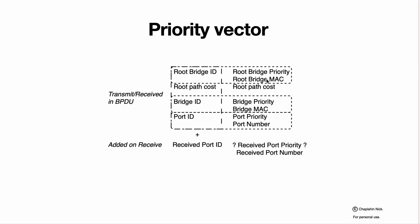Root bridge ID and bridge ID each consist of a priority value and a MAC address, making the value as unique as possible while remaining compatible. Root path cost is the cost of the path from this device to the root device — not a simple hop count, but based on the line rate of ports along the path. On each device, after receiving a BPDU, two priority vectors add additional information: the received port ID, which contains information about the port where the BPDU was received. It may contain a priority depending on the vendor, and some vendors have it while others do not, but the received port number will definitely be available.